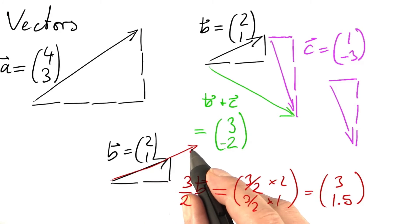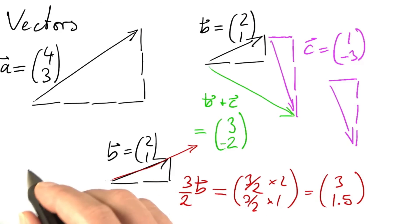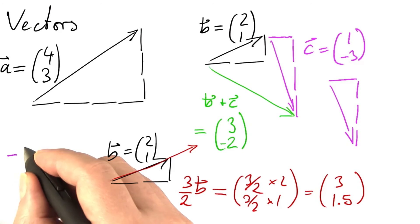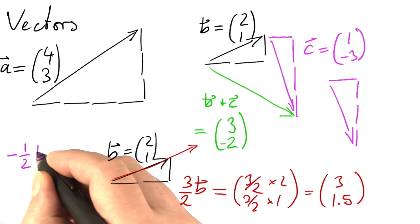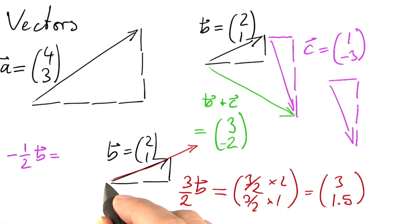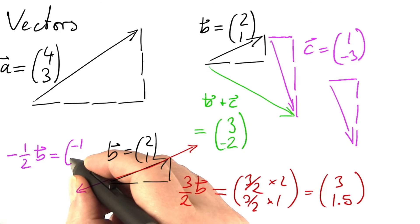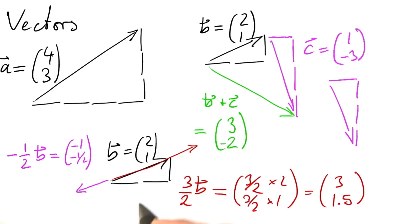If we do this multiplication with negative numbers, we're going to invert the direction of the arrow. So if I compute, say, minus 1 half b, I get an arrow of the opposite direction and half the length. In components, minus 1 half times 2 is minus 1, minus 1 half times 1 is minus 1 half. So this goes one unit to the left and half a unit down.